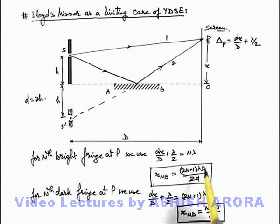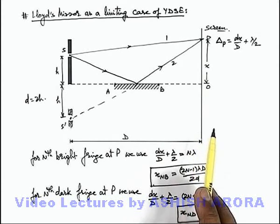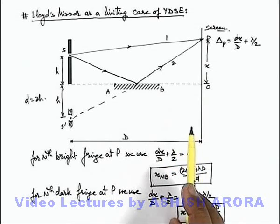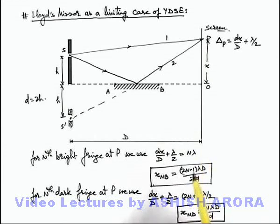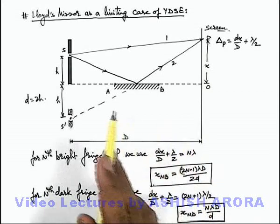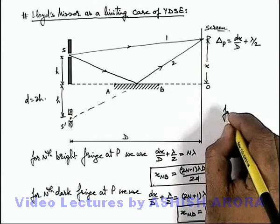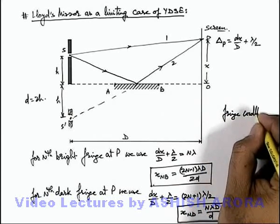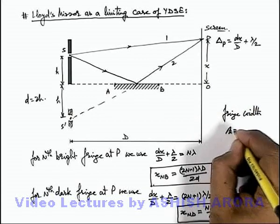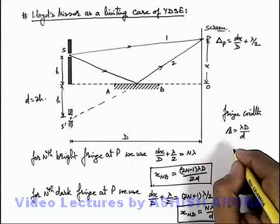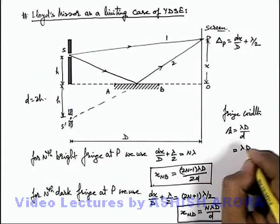So here we can see: wherever in Young's double slit experiment a bright fringe is obtained, in Lloyd's mirror setup a dark fringe is obtained there. And wherever in YDSE a dark fringe is obtained, in Lloyd's mirror a bright fringe is obtained. So you must be very careful — it is inverted compared to YDSE. By using this we can also write that the fringe width β = λD/d, and since small d = 2h, the fringe width is λD / 2h.